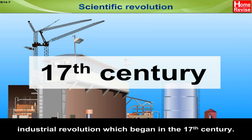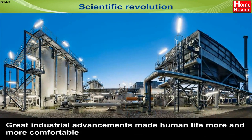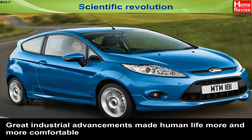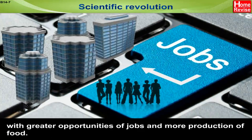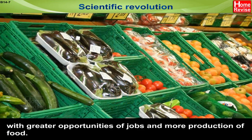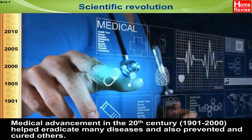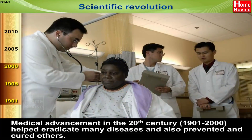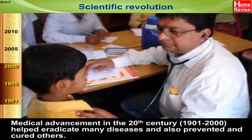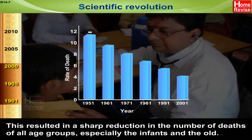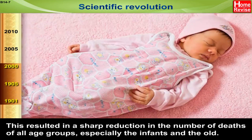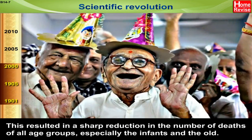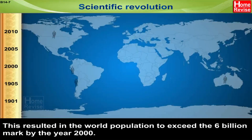Scientific revolution. The next upsurge in population growth came with the scientific and industrial revolution, which began in the 17th century. Great industrial advancements made human life more comfortable, with greater job opportunities and more food production. Medical advancement in the 20th century (1901–2000) helped eradicate many diseases and cure others. This resulted in a sharp reduction in deaths across all age groups, especially infants and the elderly, causing the world population to surge.